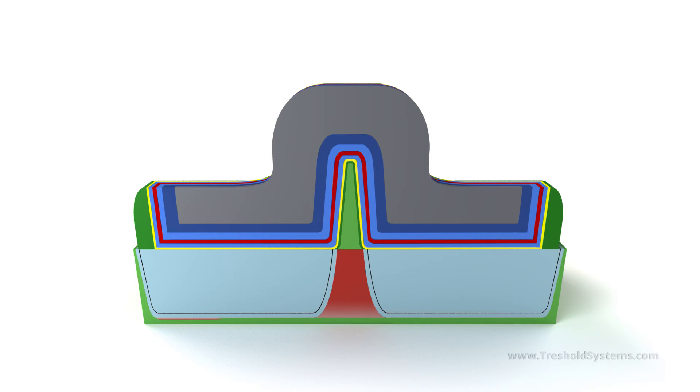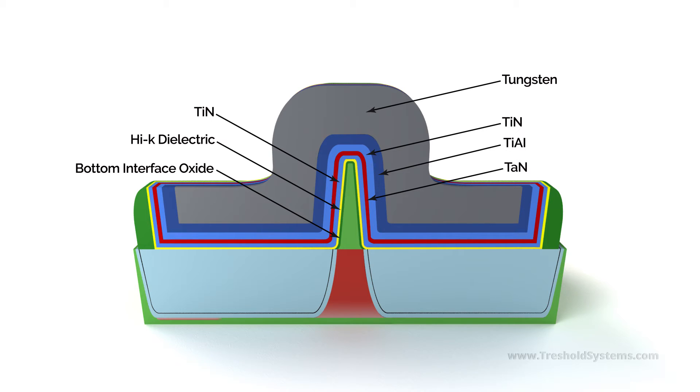A cutaway view reveals the FinFET internal structure. In this cutaway view, we see the bottom interface oxide, the high-K dielectric, and the titanium nitride work function metal. The tantalum nitride, titanium aluminum, tungsten, and the additional layer of titanium nitride are present as part of the CMOS fabrication process.